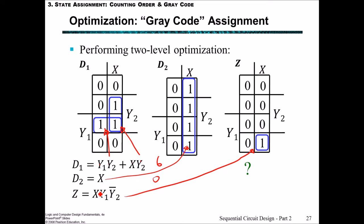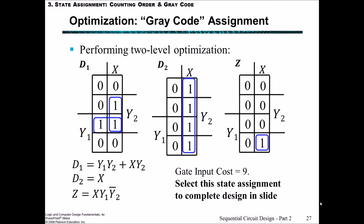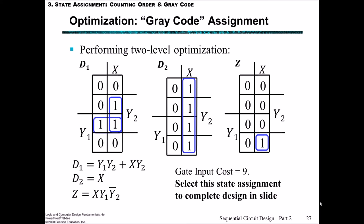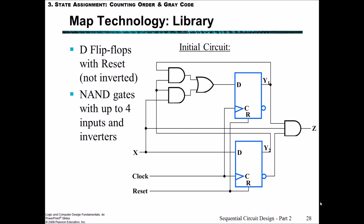We count this as 0, even though the literal count would be 1, the gate count is 0. And in this case we have 1, 2, 3. So based upon that we really have to choose the grey code assignment because a gate input cost of 9 is significantly better than the counting order state assignment where we had an input gate cost of 22. Now let's go ahead and use this grey code state assignment and map it to the technology.